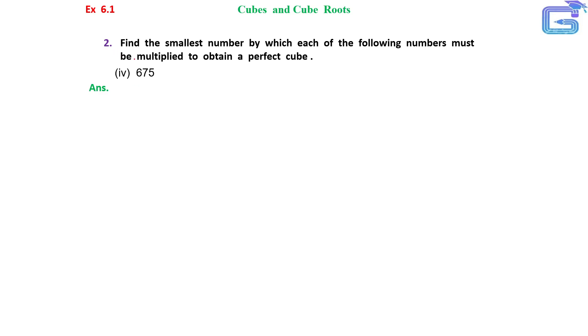Question number 2. Find the smallest number by which each of the following numbers must be multiplied to obtain a perfect cube.